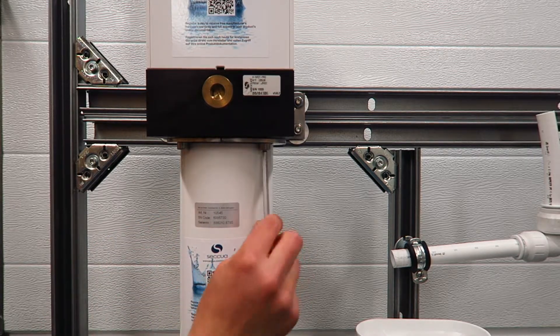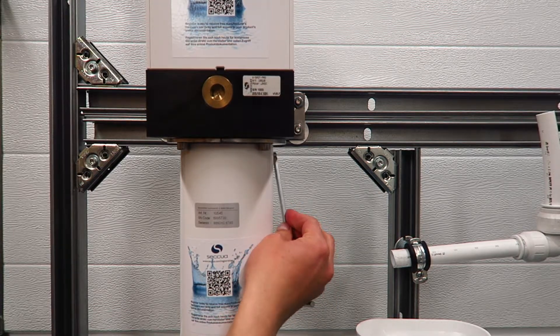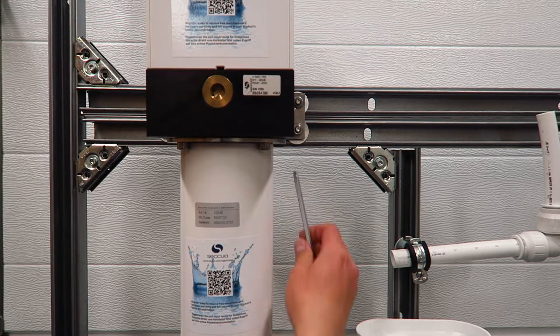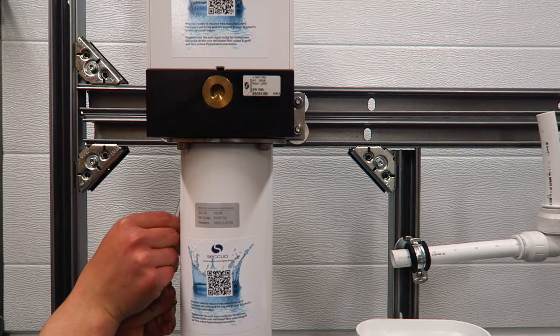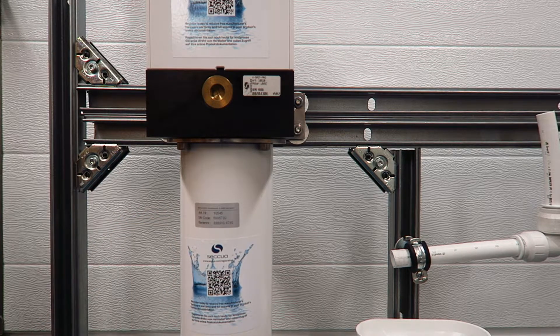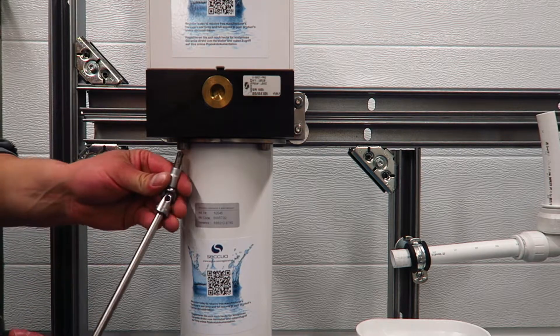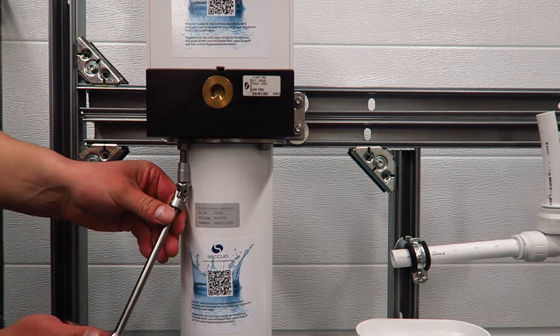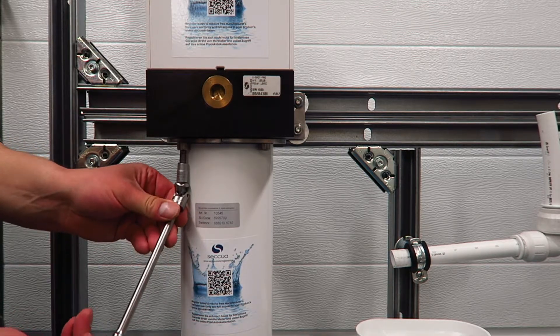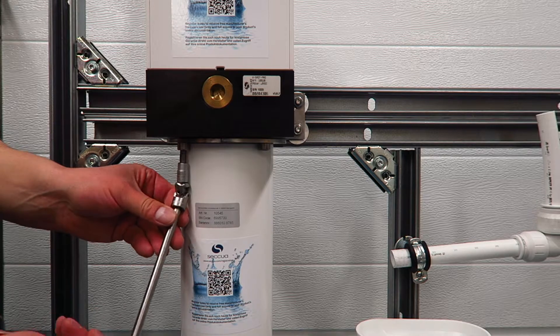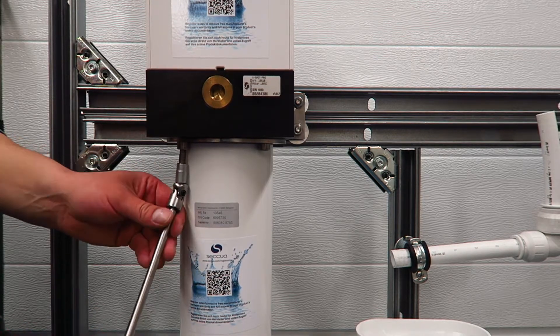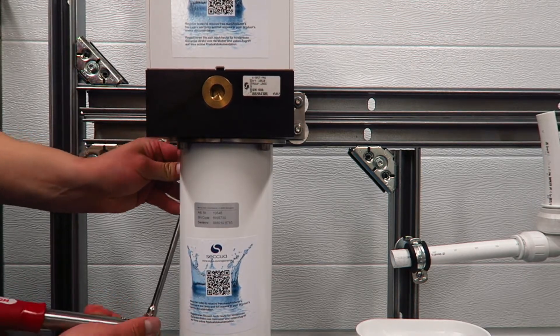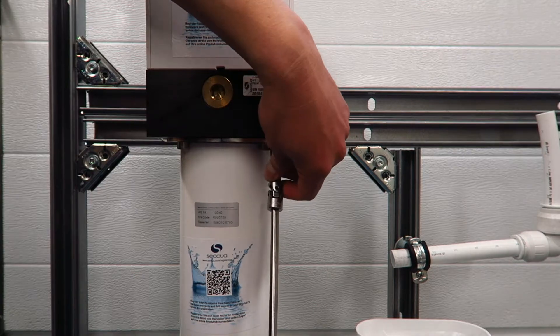Ensure that you do up the bolts evenly on all sides. The maximum torque that you can apply is five Newton meters. After you have torqued up all sides, the unit will be ready to be commissioned.